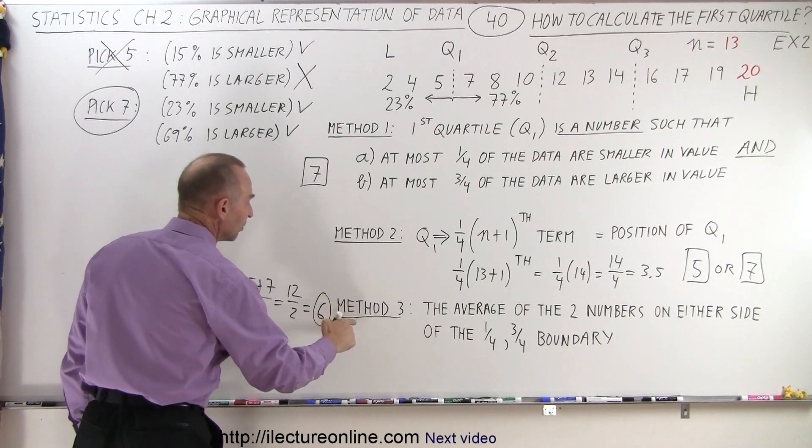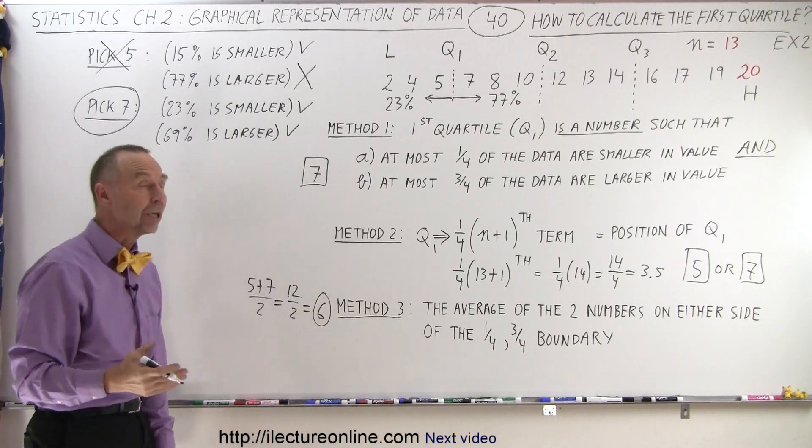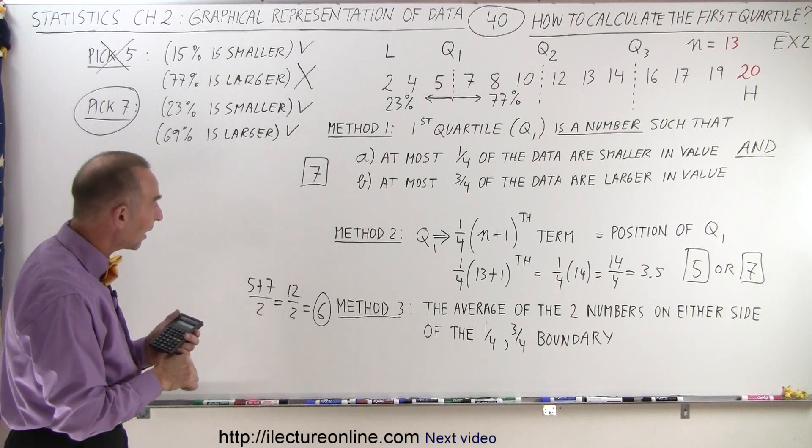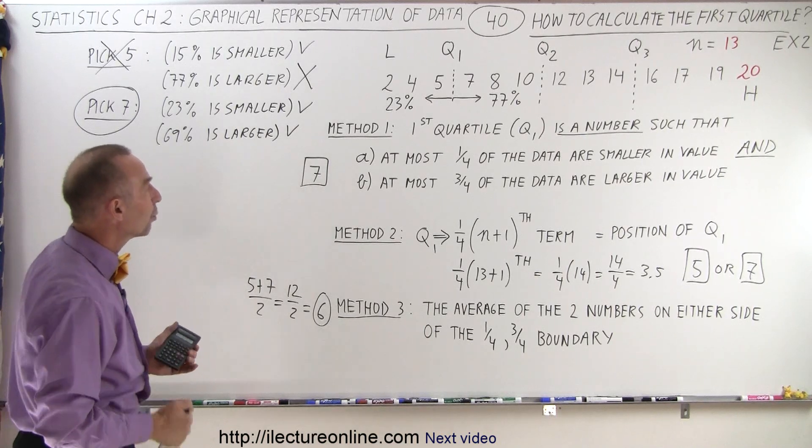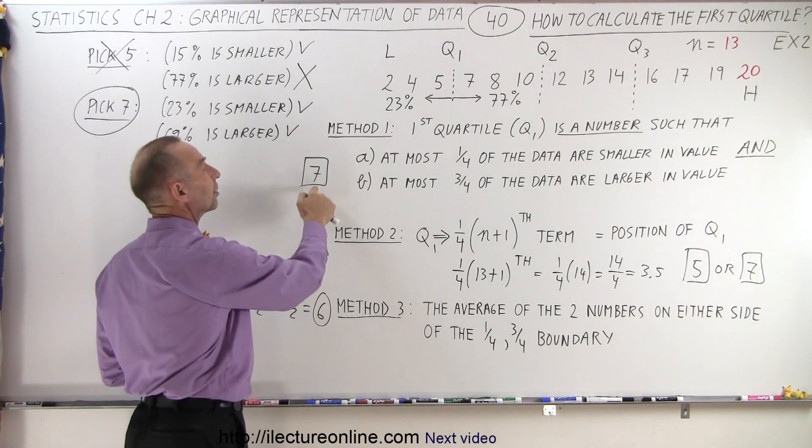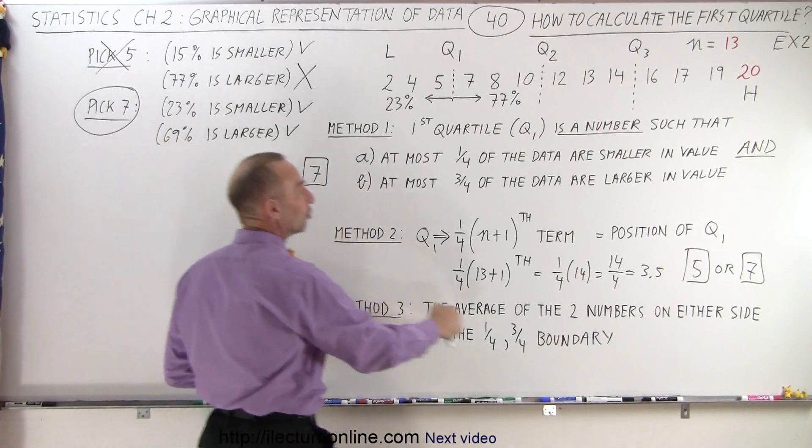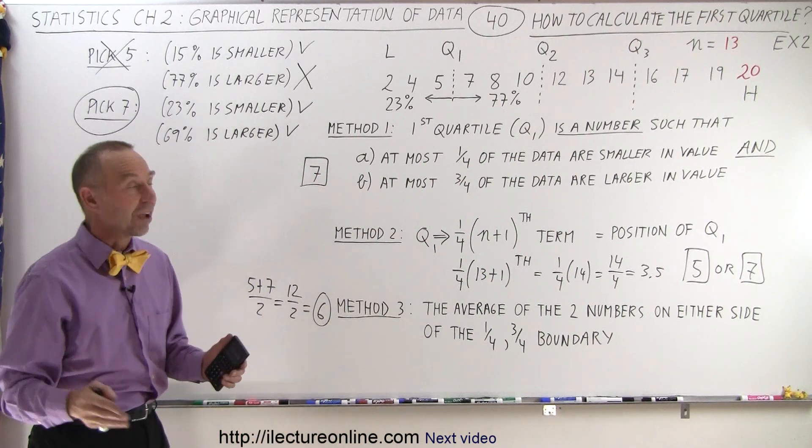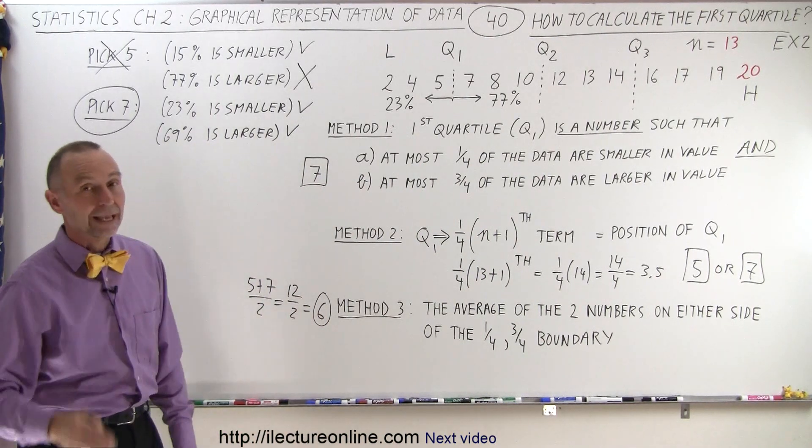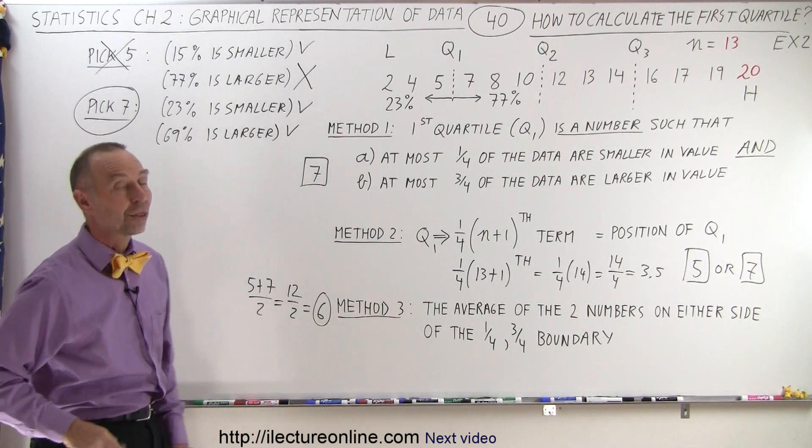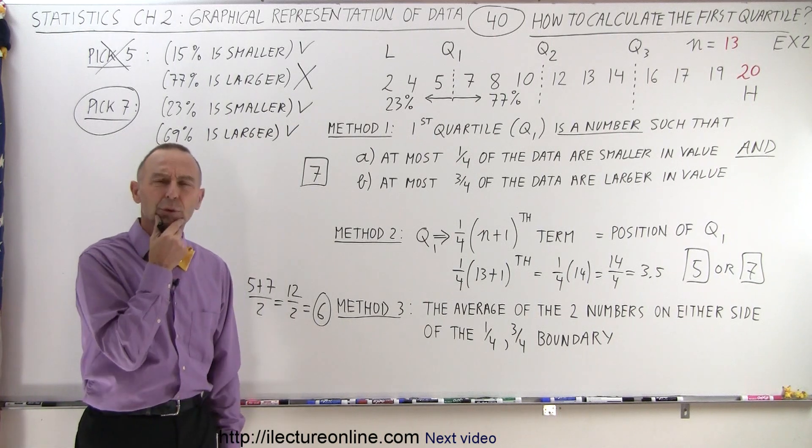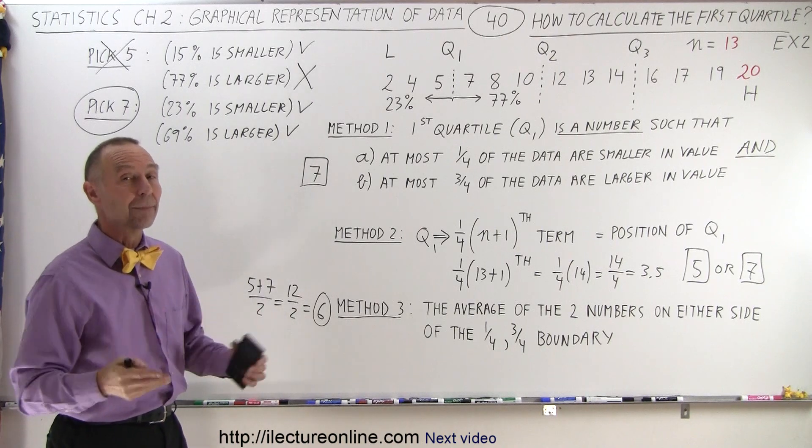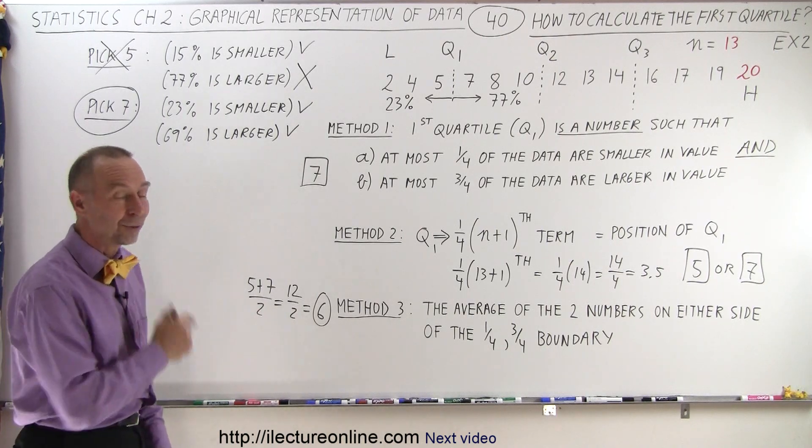Then with method 3, 6 would still be quartile 1, the first quartile. And so you can see now things have changed a little bit. Method 1 gives you only one possibility as being the correct value. Method 2 gives you two possible values, and method 3 still gives you the same average value between 5 and 7. And that's how it's done when we have 13 data points. I wonder what it looks like with 14 data points. Let's do one more, add one more data point to see what happens now. And that is how it's done.